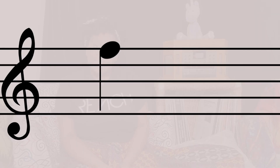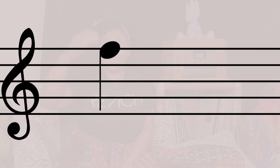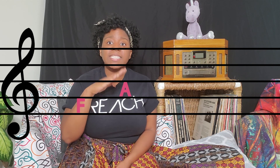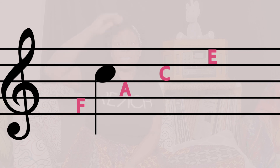So what note name is this? If we use our "Every Good Butterfly Does Fine," we would know that that note is an F. The spaces have letter names as well. The first space is F, the second is A, the third is C, and the last space is E. The spaces spell FACE — F-A-C-E. What note name is this? If we use FACE, we would see that the note is a C.